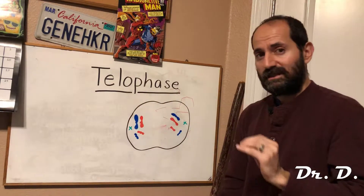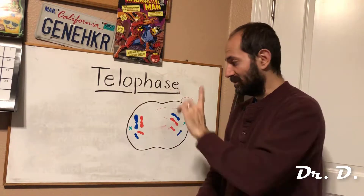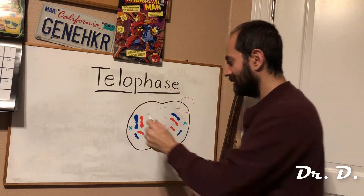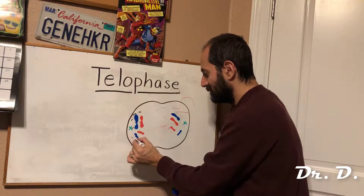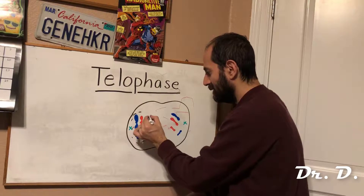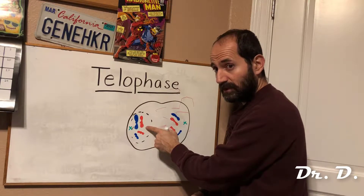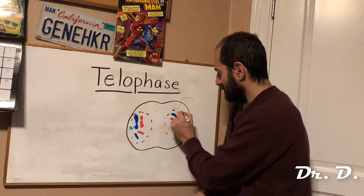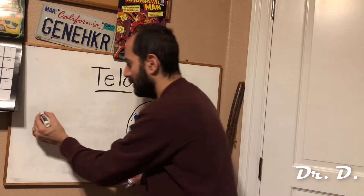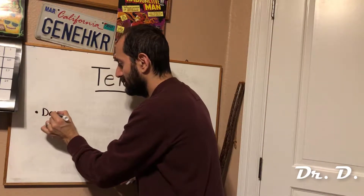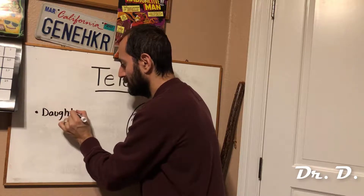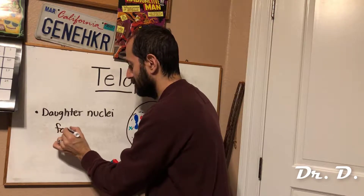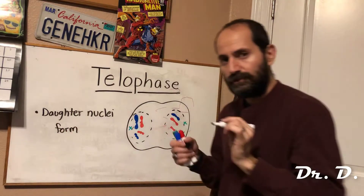The same genetics, the same genomic information is in both developing cells. And what you should realize is during telophase, a new nucleus starts to form. A nucleus starts to form around this genome, this DNA, and a new nucleus starts to form around this as well. Two daughter nuclei form.